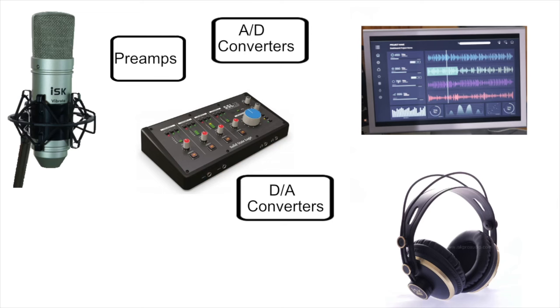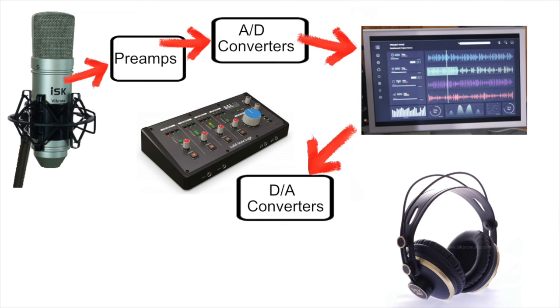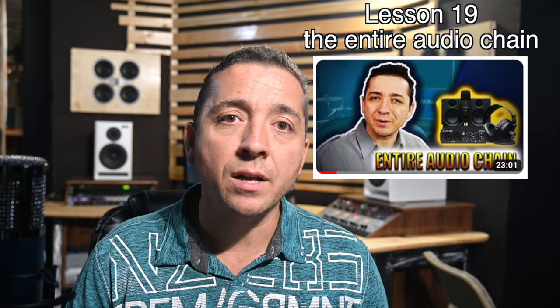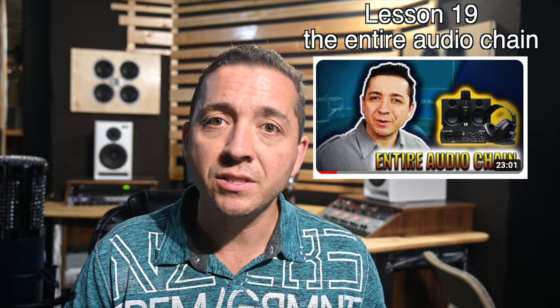In order to fix any problem you need to know what's causing the problem. When you record, the signal goes from the microphone to the preamp to the converters to the DAW, back to the converters, then to your monitoring. I have another video explaining this entire recording chain in detail, but for this video we're just going to talk about the parts of this chain that incur delays.